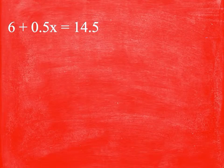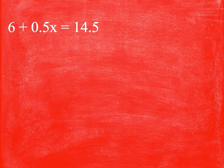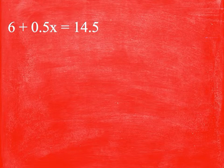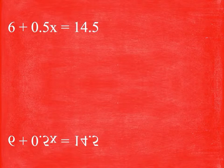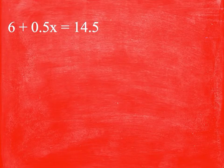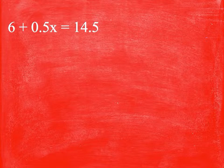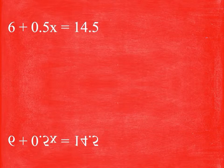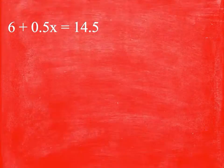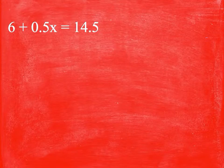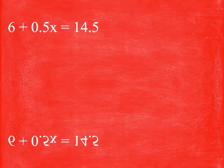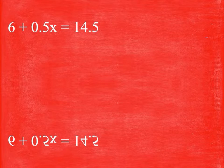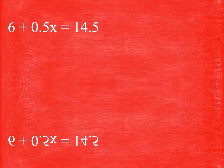Move that decimal over, goes in once, and right there, so x is equal to 17. We can check that answer by going 6 plus 0.5 times 17. That is equal to 6 plus 8.5, which is equal to 14.5.